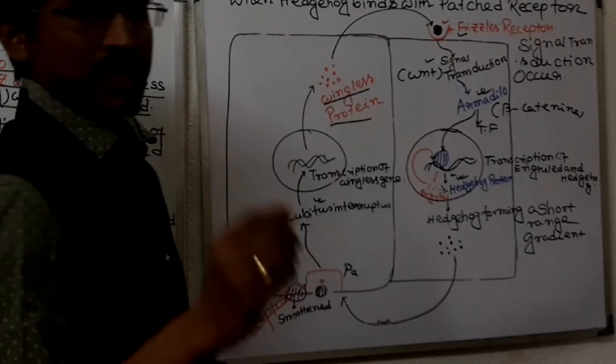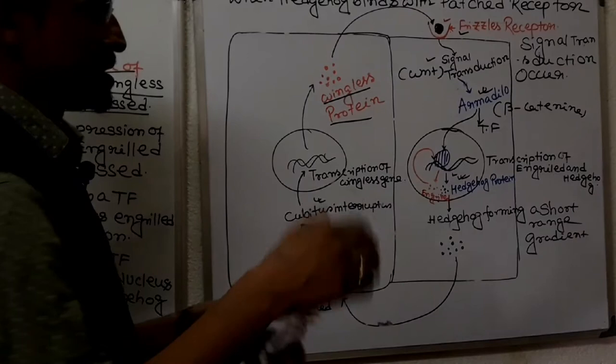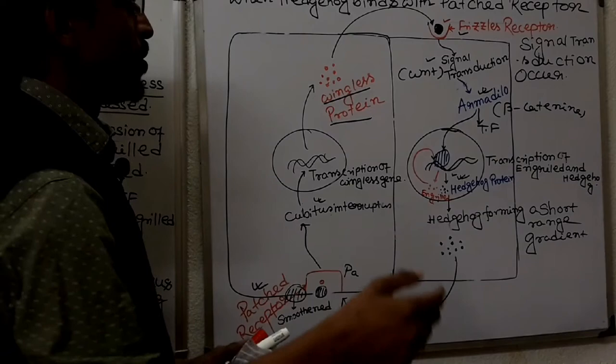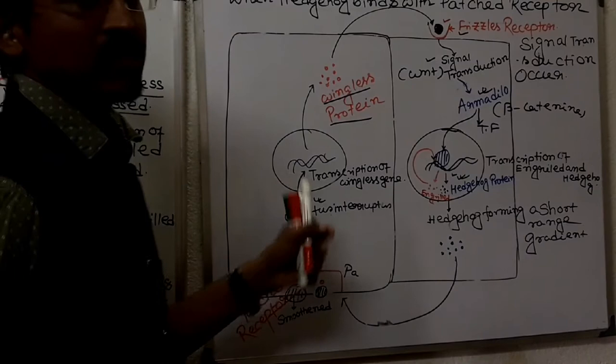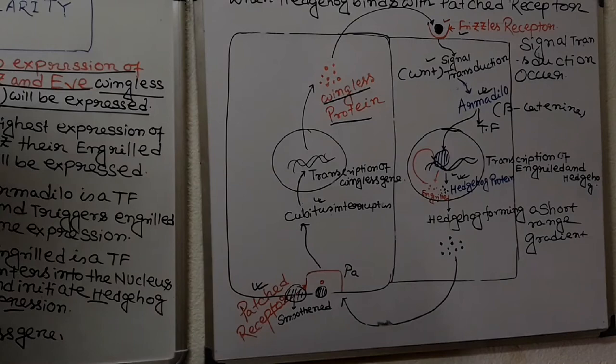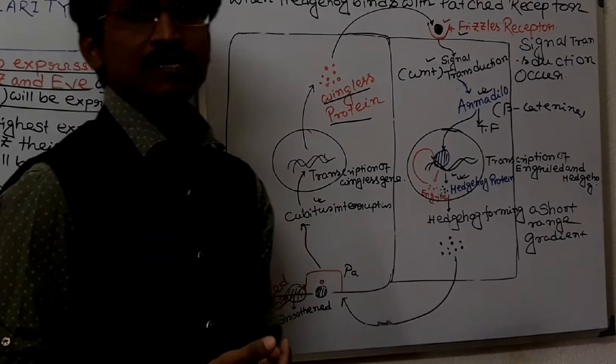If there is a mutation — for example, if engrailed is mutated — the number of para segments will be reduced to around 7 or 8 para segments instead of 14. This is how segmentation occurs in Drosophila body pattern formation. The important roles of engrailed and wingless gene transcription in the formation of para segments have been discussed.